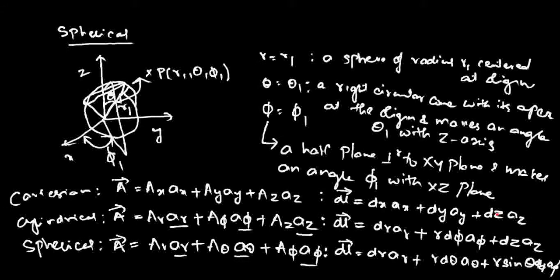In a separate class for electrical students where inductance and capacitance calculations are discussed, the expressions for dS and dV will be provided. But in this combined class, the dl̄ expression is sufficient. We will use the expression for dl̄ in electrostatics, magnetostatics, as well as electromagnetic waves and antennas, so you should be proficient at using this dl̄ equation in all three coordinate systems.